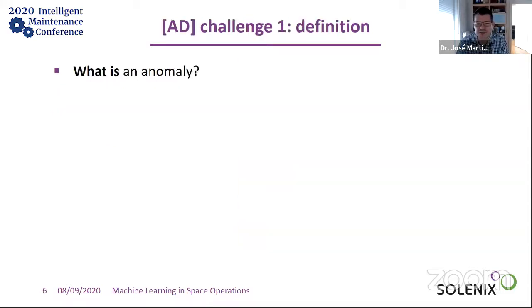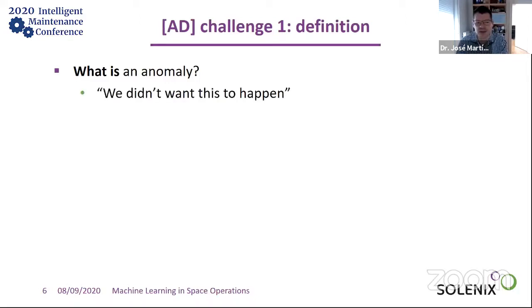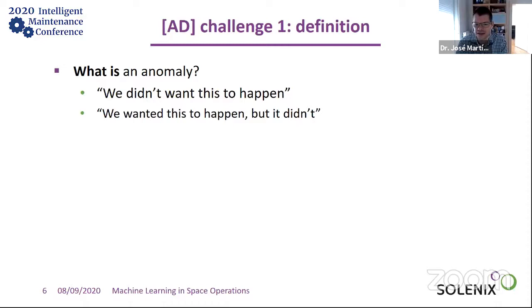What is an anomaly? It's hard to tell. Some say it's something not respecting the specifications the system was built for. In space operations, our working definition is: we didn't want this to happen — and this applies to about 95% of the anomalies we encounter. For completeness, the other 5% is: we wanted this to happen, but it didn't.